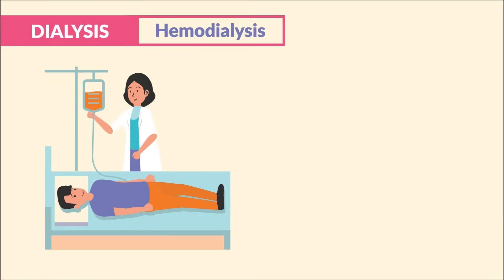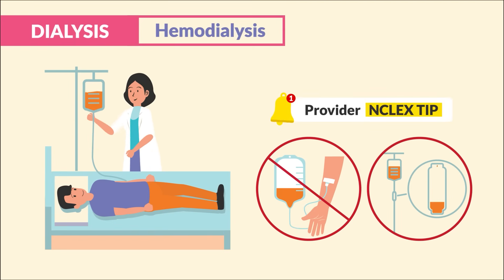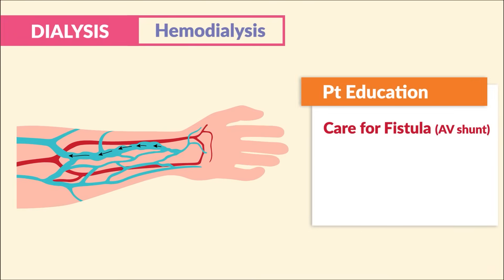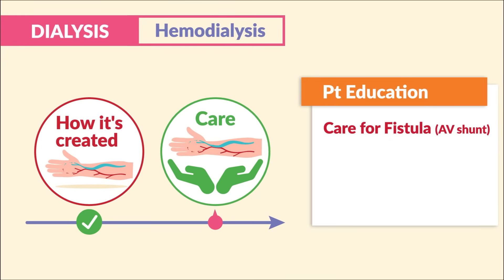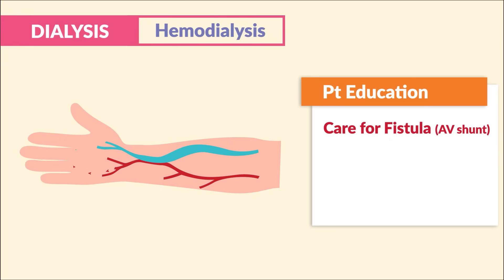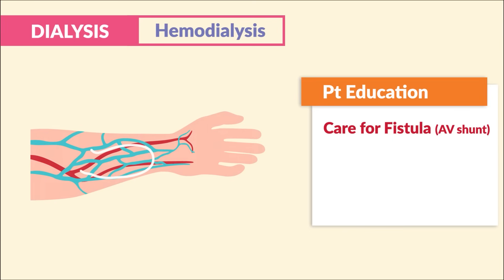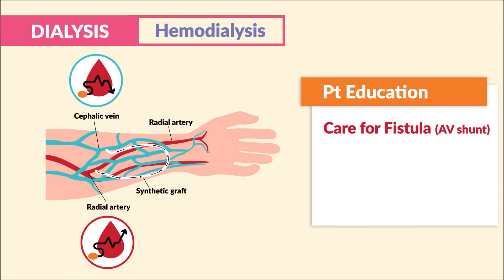A general NCLEX tip: any infusion causing a problem, we stop or slow the infusion immediately and contact the provider. Now for patient education in terms of care for a fistula, you must understand how it's created before you can properly care for it. Creation involves a connection between an artery and a vein, typically near the wrist or forearm. It permits high pressure arterial flow to go through a low pressure vein.